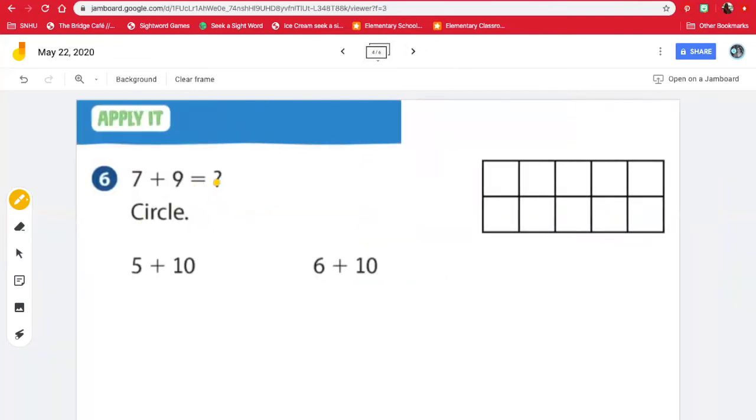7 plus 9 equals what? And we need to circle. So let's draw 7 in yellow. We have 1, 2, 3, 4, 5, 6, 7. So here's our 7. And let's draw the 9 in blue. Let's fill in our 10 frame first. Count with me. 1, 2, 3, 4, 5, 6, 7, 8, 9. So here I noticed that we have one 10. So we have 10, 10 and how many left over? One, two, three, four, five, six. We have six left over.